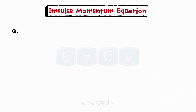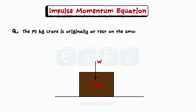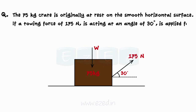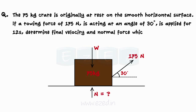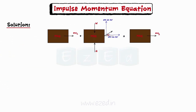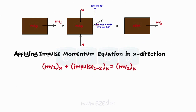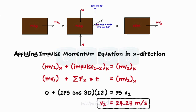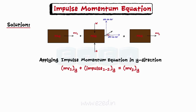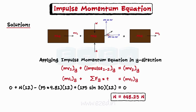Let us solve a problem on the impulse momentum equation. A 75 kg crate is originally at rest on a smooth horizontal surface. A towing force of 175 N is acting at an angle of 30 degrees and is applied for 12 seconds. Determine the final velocity and normal force which the surface exerts on the crate during this time interval. We first draw the diagram showing initial momentum, the free body diagram with all forces acting, and final momentum. Applying the impulse momentum equation in the x direction and multiplying forces by time, we get the final velocity of the crate. Applying the impulse momentum equation in the y direction, we get the normal force which the surface exerts on the crate.